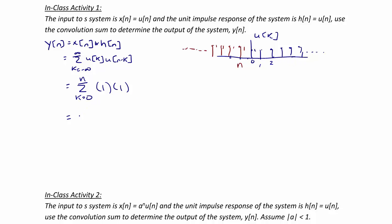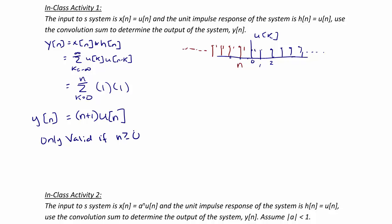So, the result of this is that y of n is equal to n plus 1. But we know this is only valid for n greater than or equal to 0, so we multiply by u of n. This is used to show that this is only valid if n is greater than or equal to 0.